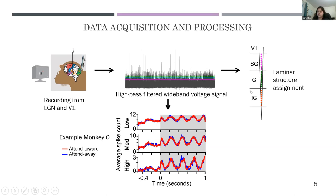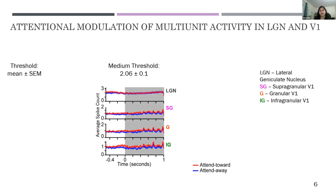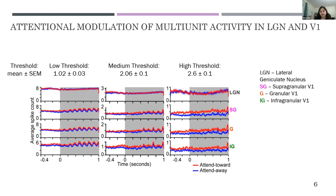We further subdivided and classified V1 data into different layers: supra-granular, granular, and infra-granular. Combining data across monkeys, sessions, and recording contacts for the medium threshold — where the threshold was on average two standard deviations from the mean of the wideband signal — we plot neuronal responses in red for attend-toward and blue for attend-away. In LGN, both curves are nearly on top of each other with no visible differences. In the supra-granular and infra-granular layers of V1, the red curve exceeds the blue curve, with similar modulation patterns across low and high threshold conditions.